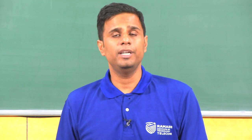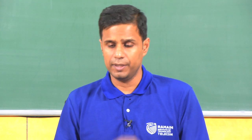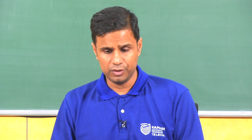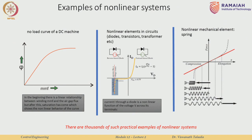Now we understand what linear and non-linear mean, and we have understood superposition — this applies to all physical examples: electrical, mechanical, and so on. Examples of non-linear systems include diode behaviour, which is one of the classic examples — in one region it is approximately linear, but in another region it changes completely. Even a mechanical spring is non-linear; all springs in life are really non-linear.